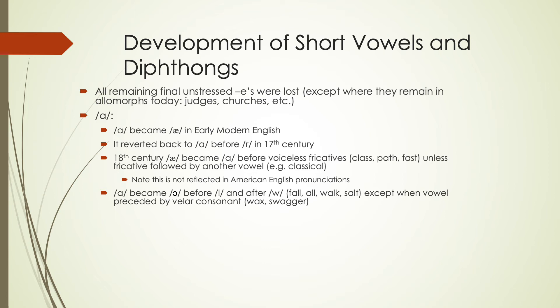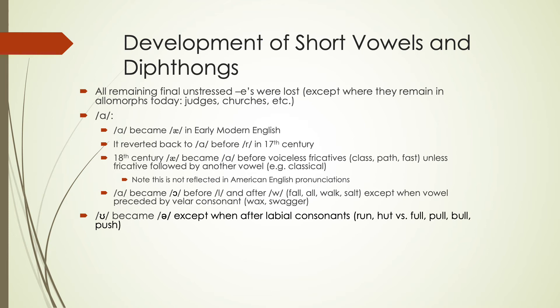A became AW before an L and after a W — so 'fall,' 'all,' 'walk,' 'salt' would in many cases be pronounced more like 'fawl,' 'awl,' 'wawk.' Some dialects still do this today while others do not. Then U became UH, except after a labial consonant — so you see 'run' and 'hut,' but you see 'full,' 'pull,' 'bull,' and 'push' after labial consonants. The biggest distinction is rounding — they're relatively close in the mouth but were unrounded after those labial sounds.